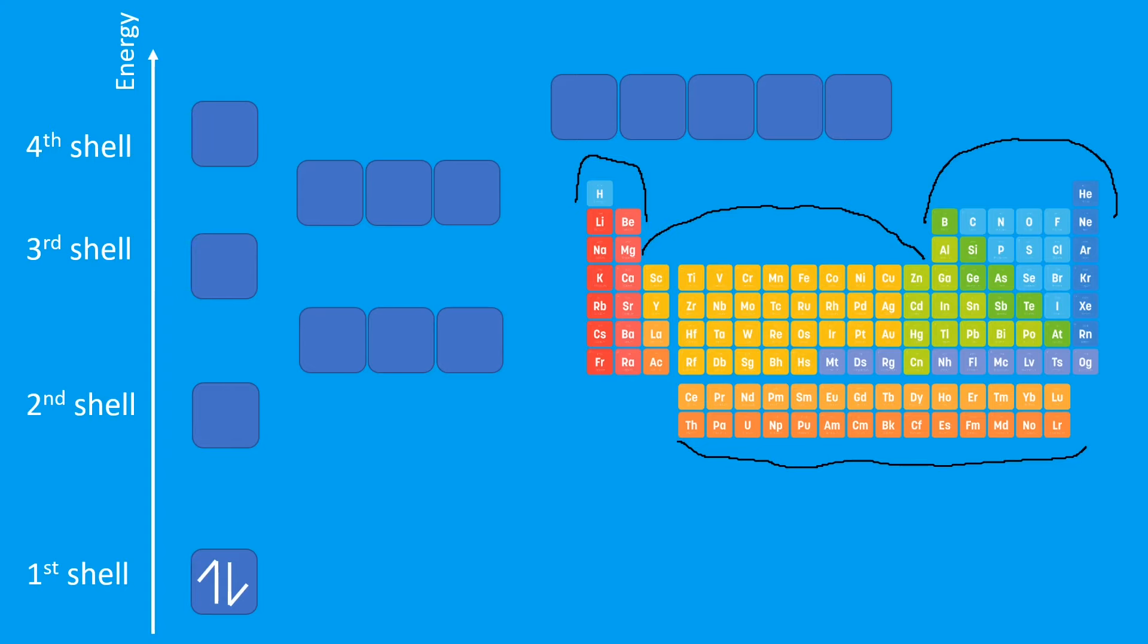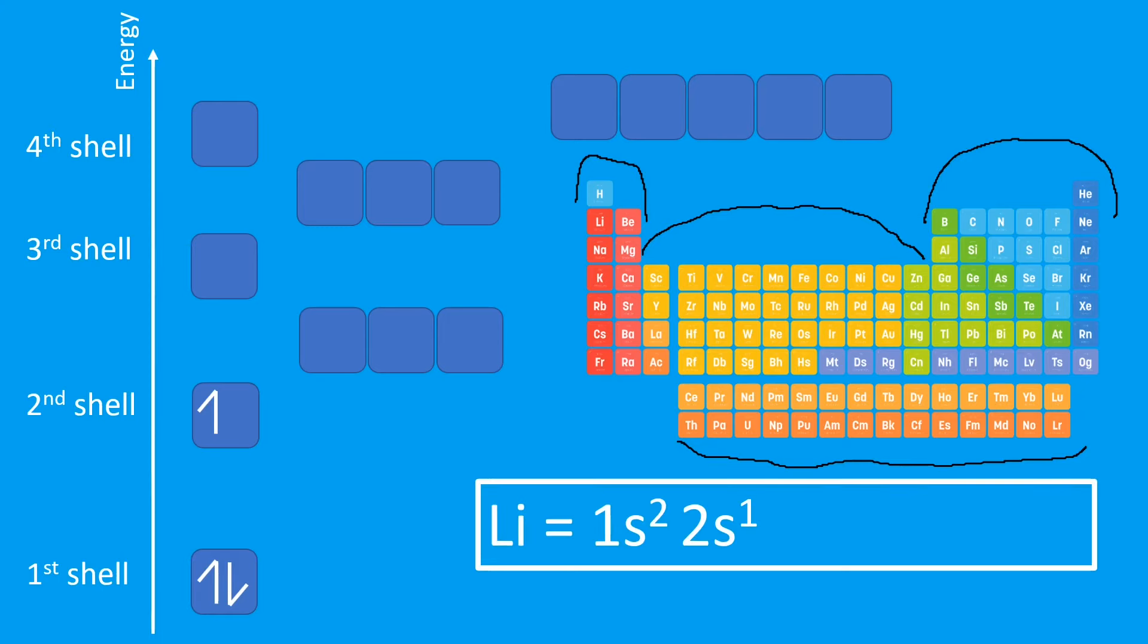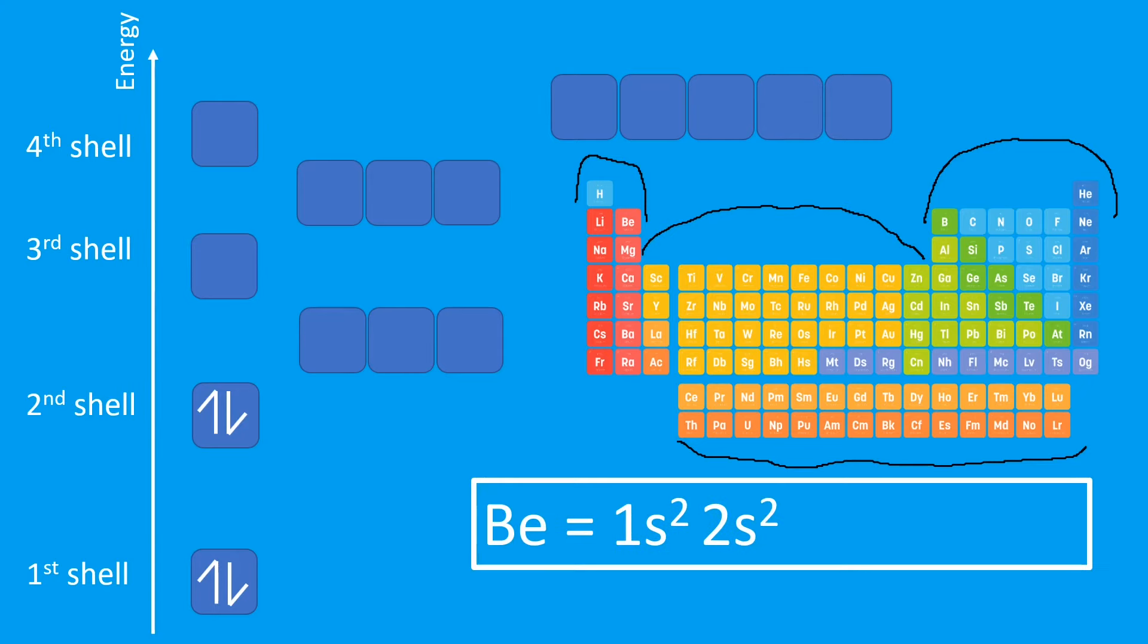The second element, helium, is 1s2. Notice how I've put a downwards arrow this time. That's because when electrons pair up, they will always pair with opposite spin. So I must always have one up and one down in each box. The third electron will go in the second shell because the first shell is now full. This would be lithium, 1s2 2s1. Then the fourth electron will be 2s2. So the first number is the shell, an s subshell, and there's two electrons in it.